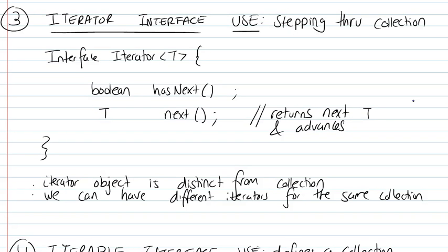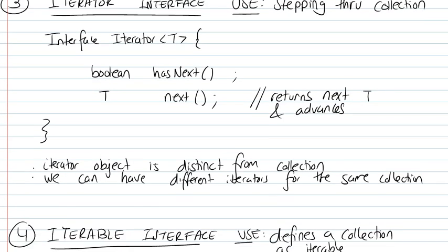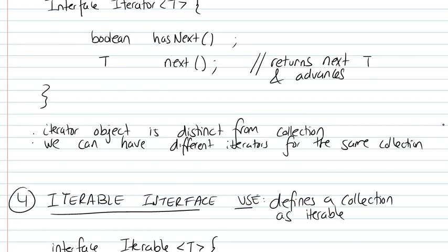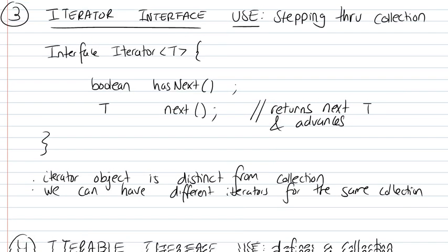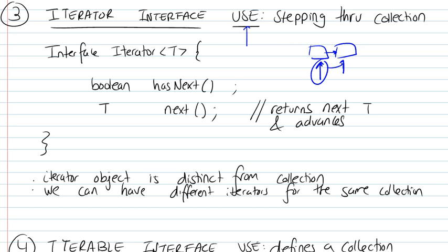The next interface we're going to be looking at is the iterator interface, and we're going to be looking at it in conjunction with the iterable interface. The iterator interface allows us to step through a collection. When we had collections, we defined certain lists and wanted to step through them, and we had to actually handle pointers — moving them around, defining a current head, going to the next head, and returning that element. To abstract all of this, we use an iterator interface, which defines a certain object that will iterate through the list.